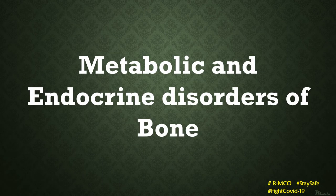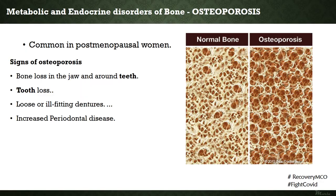Moving further, we will discuss some metabolic and endocrine disorders of bone. One of the most common is osteoporosis — a pathology wherein the bone gradually loses its mineral content, becoming less mineralized and weaker. Osteoporosis is common in postmenopausal women, affecting women about twice as commonly as males. It leads to a number of complications associated with bone, especially the long bones.